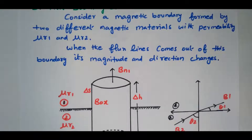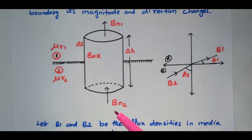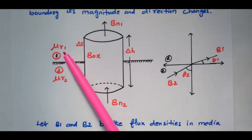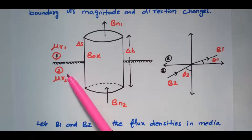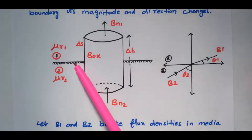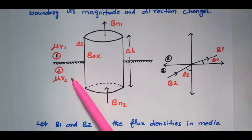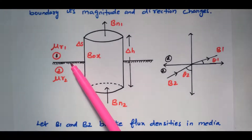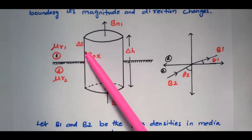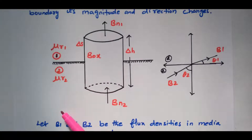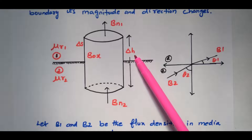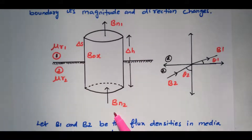Consider this diagram. This is the first magnetic material with permeability mu_R1. This second region refers to the second magnetic material with permeability mu_R2. Both are combined together, separated by this line, which is the boundary between the first and second magnetic material. We consider one box placed at the boundary such that half is available in the first magnetic material and half in the second magnetic material. The surface area of this box is delta_S and the height of this box is delta_H.